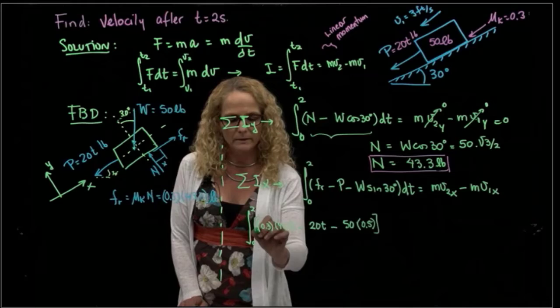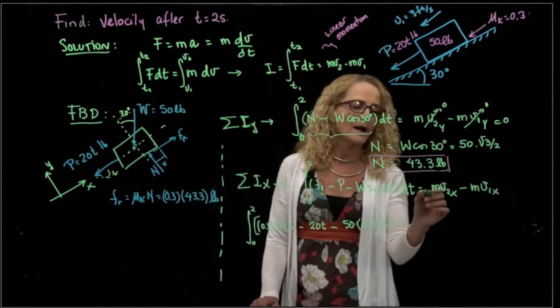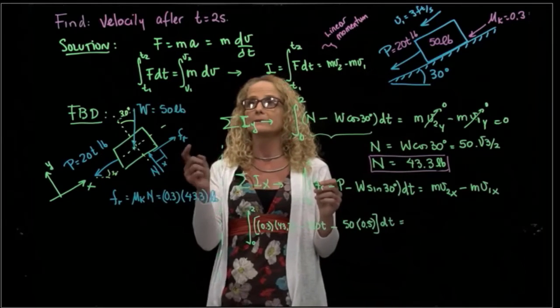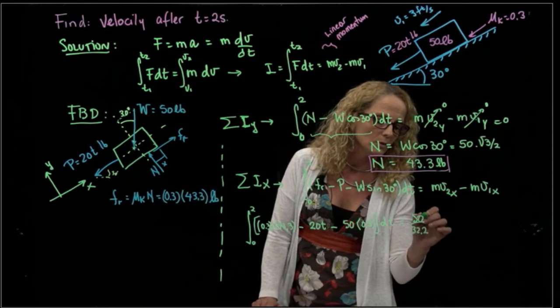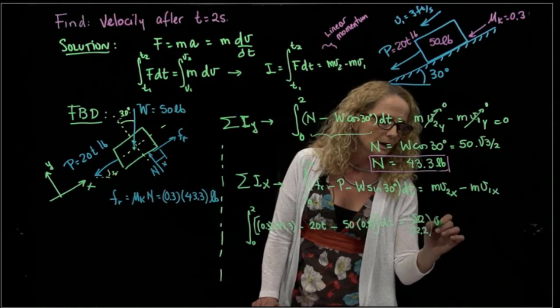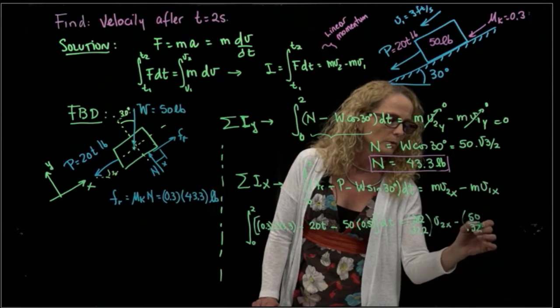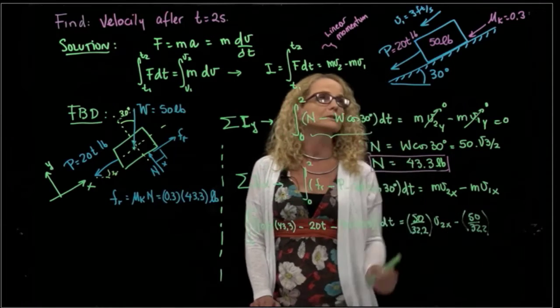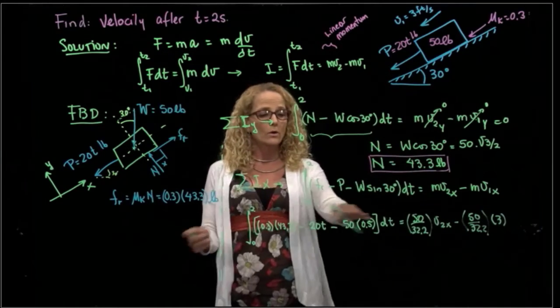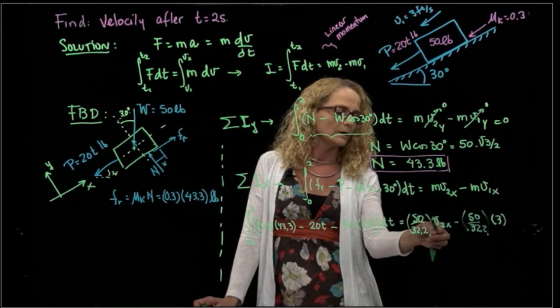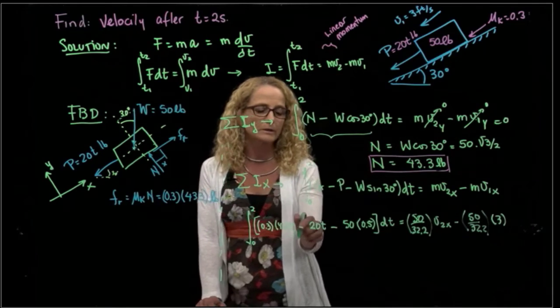This I have to integrate it with respect to time, and that will be equal to mass. Remember that the mass is a derived unit, so this is 50 over 32.2, and that's the velocity I need to find, minus 50 over 32.2 times the initial velocity, which is given. So in all these equations, the only unknown that I have is the velocity V2X, so I will solve for that. I have to solve that integral.